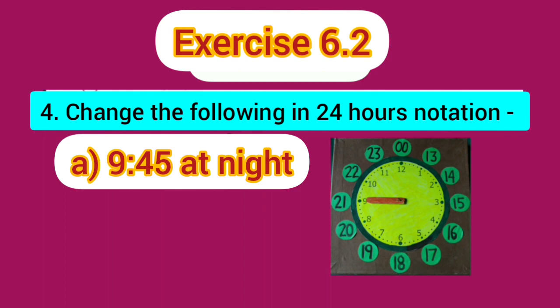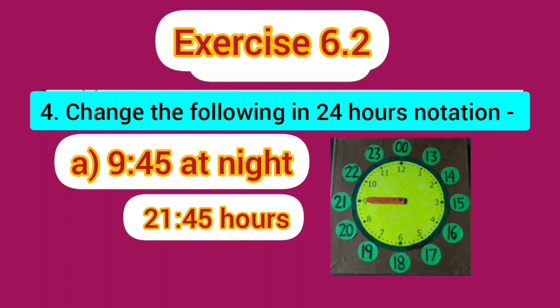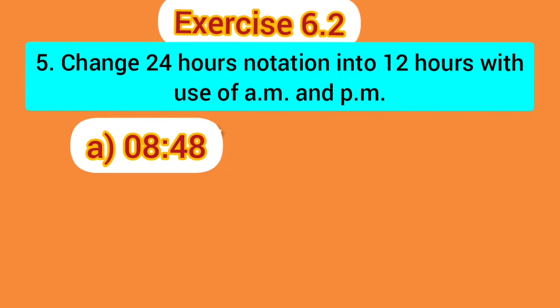Part B is 9.45 at night. We have learnt that in 24 hour notation, the time 9 o'clock at night is shown as 21. So we write the minutes in the same way. The correct answer for 9.45 at night is 21.45 hours.